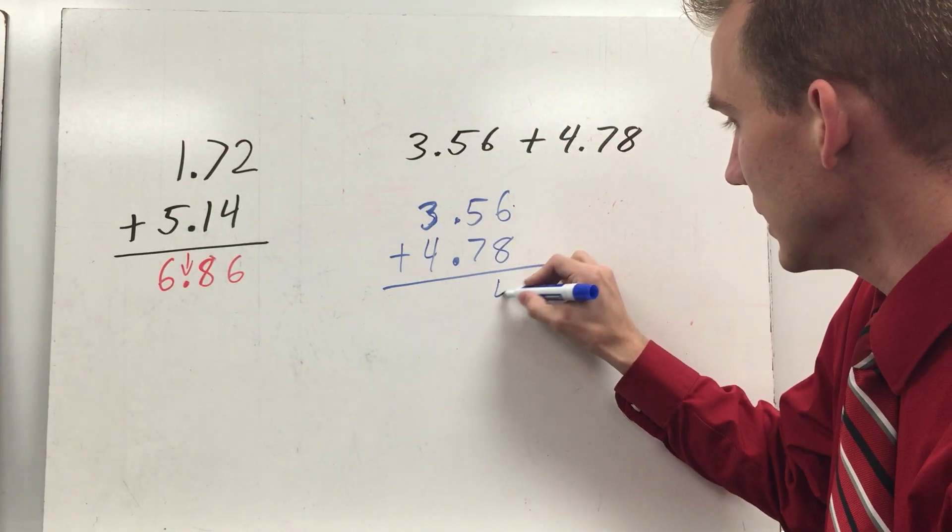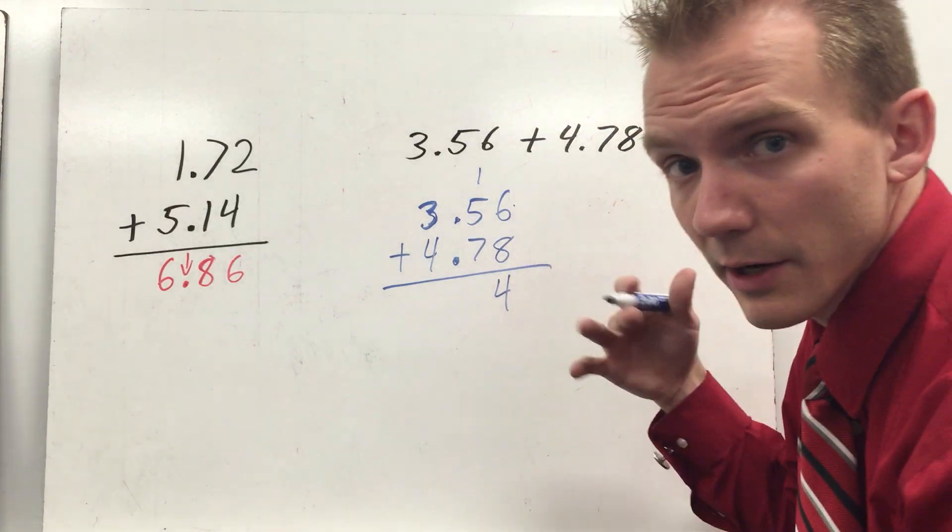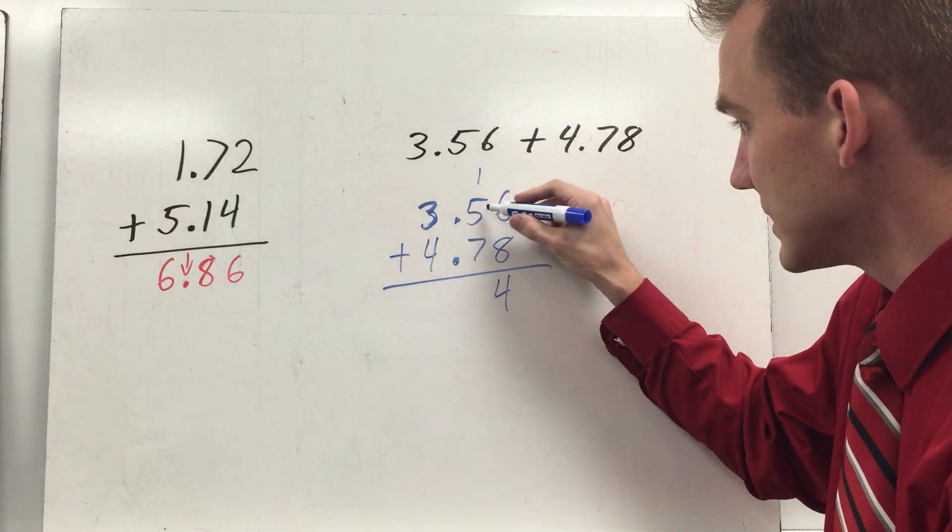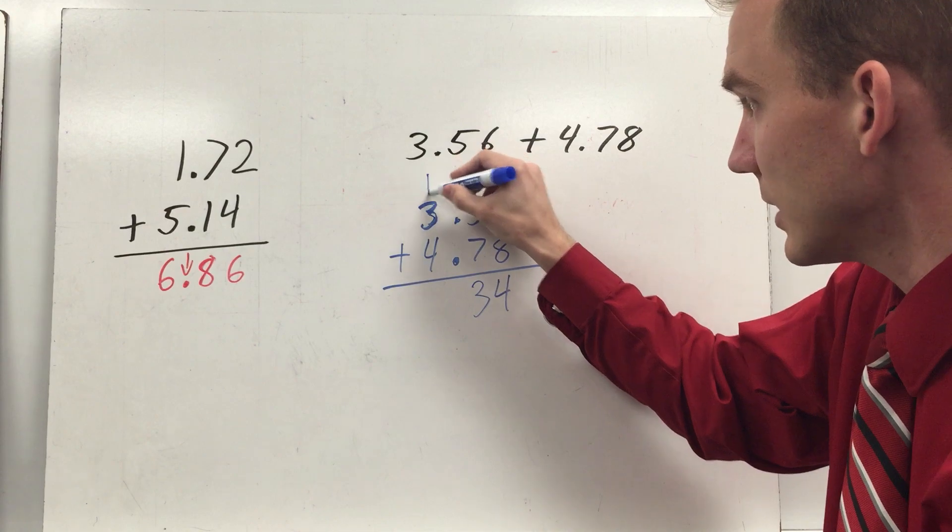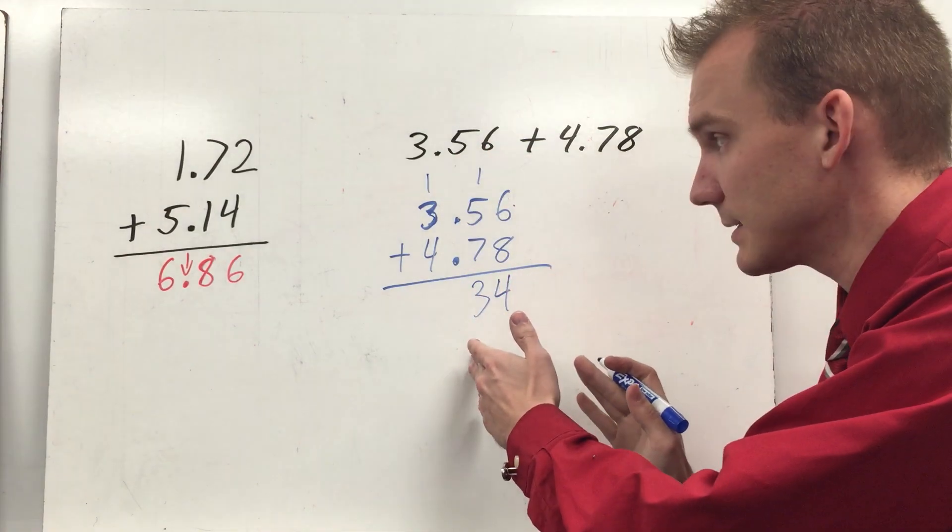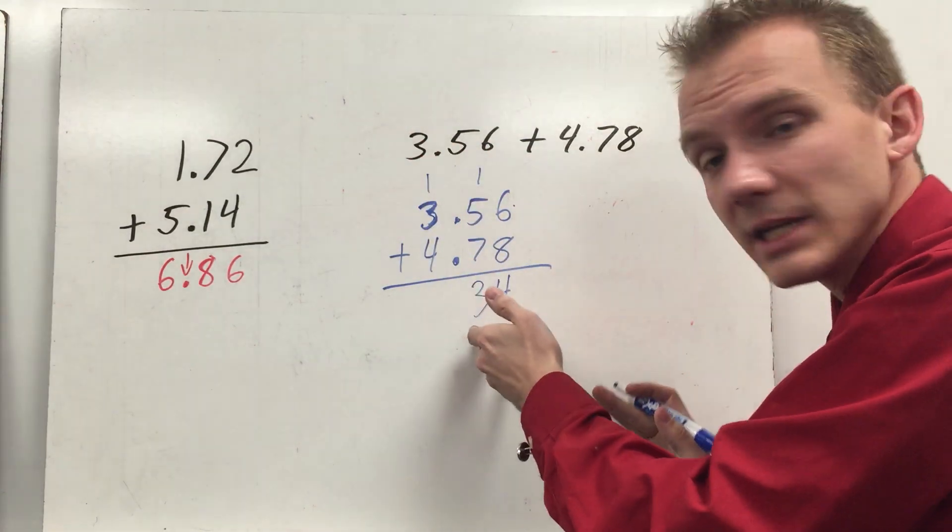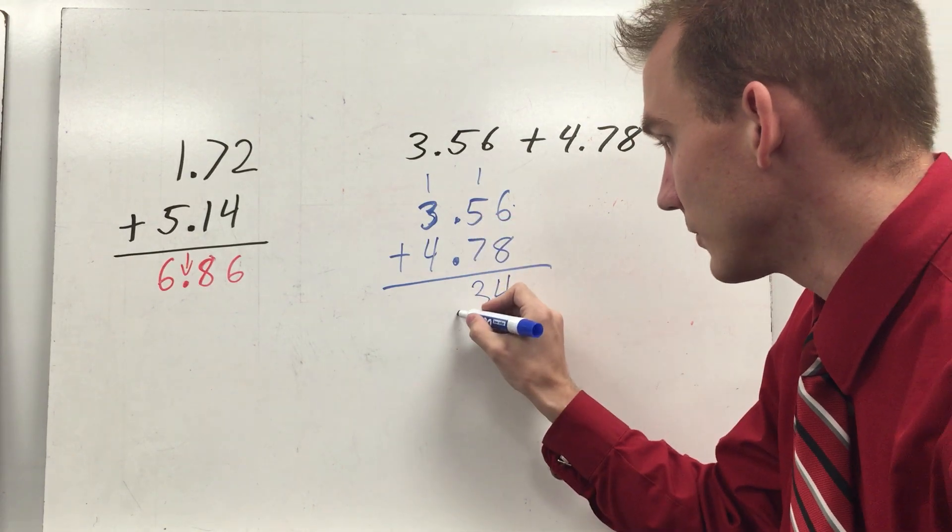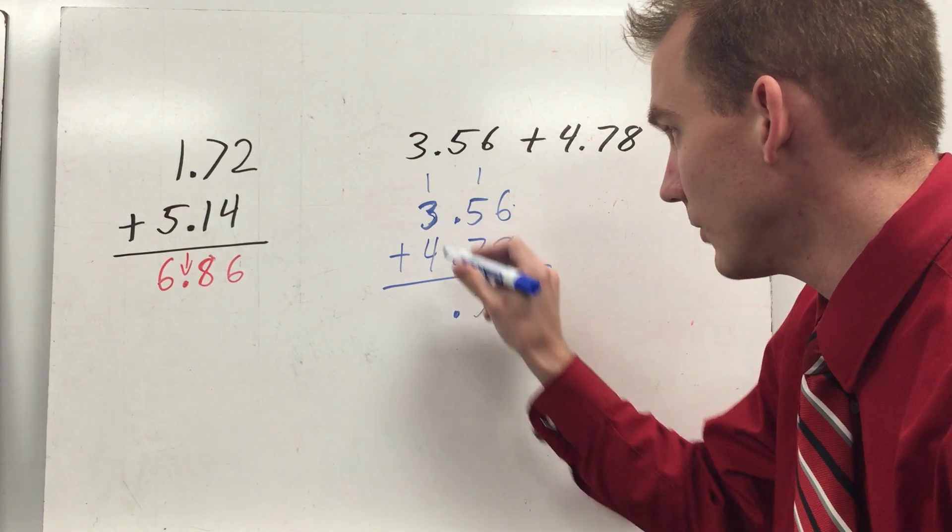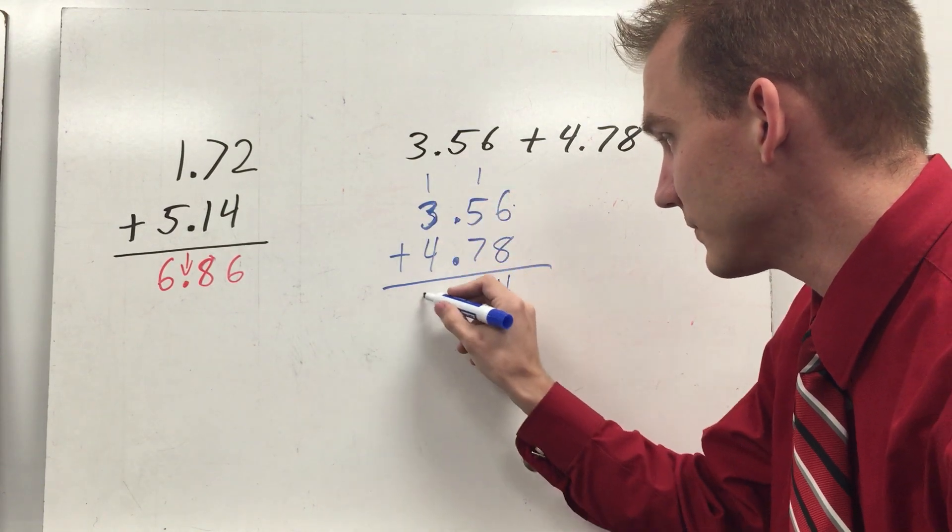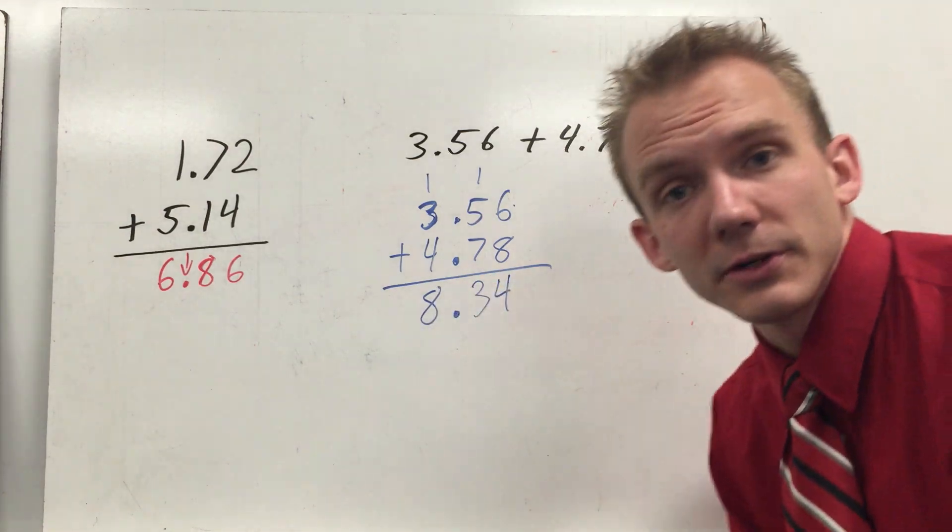Six plus eight is fourteen. I put down the four, I regroup. Carry. One plus five is six, plus seven is thirteen. Again, I can still carry because I have 13 tenths. That equals one one and three tenths left over. You can bring down your decimal point now. That comes straight down. One plus three is four, plus four more is eight. 8.34.